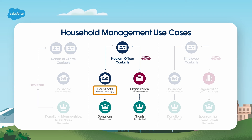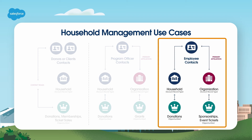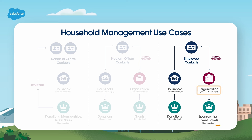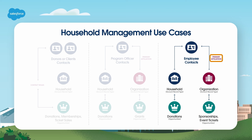In this example, the program officer can donate personally to the nonprofit through his household, and his foundation can also provide a grant. Third, we have an employee at a corporate sponsor. This person can donate personally to the nonprofit via their own household, and their company can also provide sponsorships, event tickets, or other benefits. The employee is affiliated with the company they work for via their primary affiliation on their contact record.